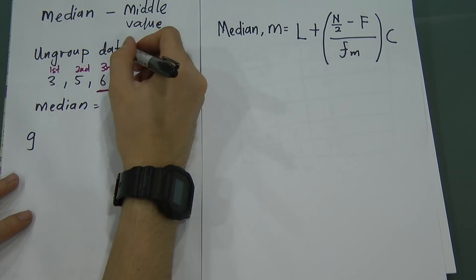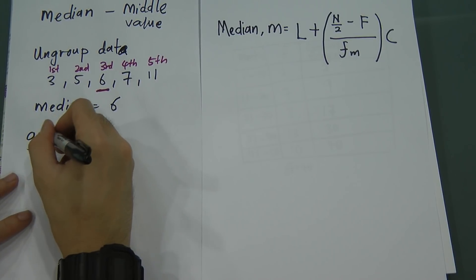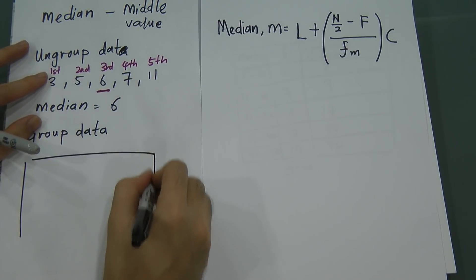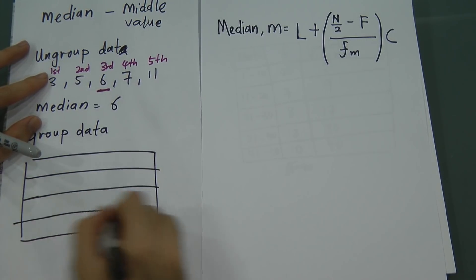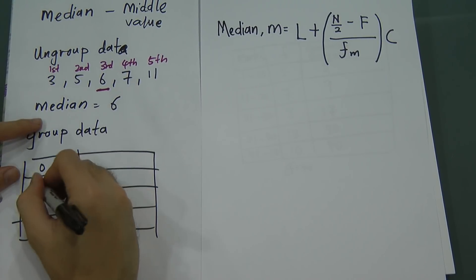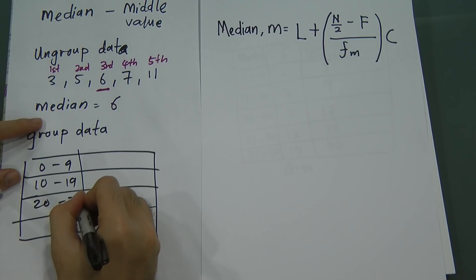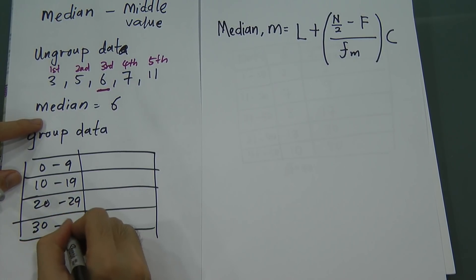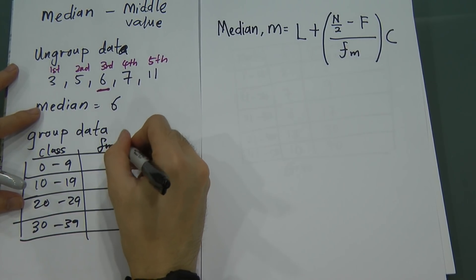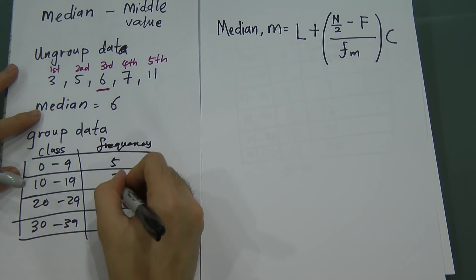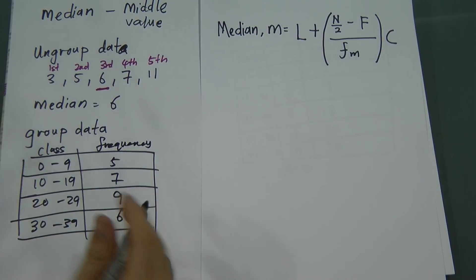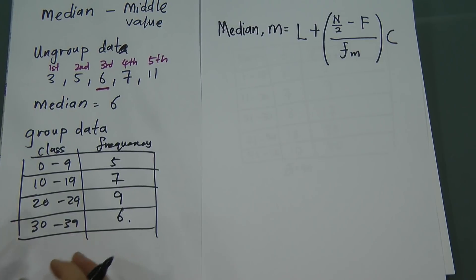But in grouped data — for grouped data — how are you going to find the median if the data is already categorized into different classes? Let's say 0 to 9, 10 to 19, 20 to 29, and 30 to 39. This is the class, and this is the frequency. Maybe it gives you 5, 7, 9, and 6. So how do you find the median?